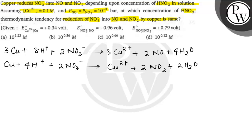Yeh NO ke liye first one, NO2 ke liye second one. Toh let the concentration of HNO3 is X. HNO3 ka jo concentration hai, let it be X.